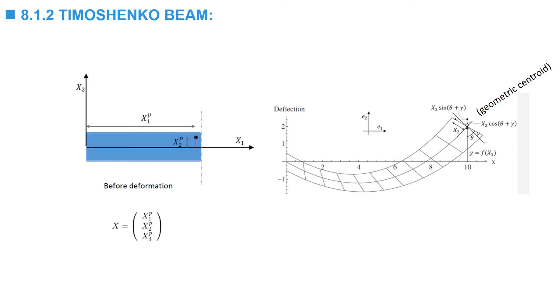Let's assume a point with original coordinates x1p, x2p, x3p. Assuming that plane sections remain plain but not necessarily perpendicular, we can find the new locations of the point as a function of the two deformation functions y, which is the displacement of the line of the geometric centroids, and gamma, which is the shear deformation. The formulation here is exactly similar to the Euler-Bernoulli except for the addition of this angle gamma, which describes the additional rotation of the cross-section.